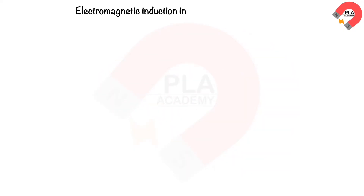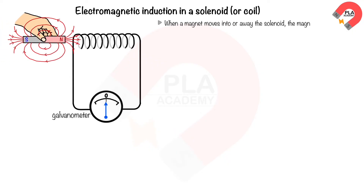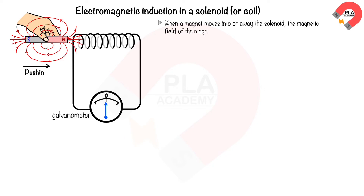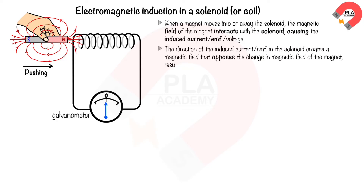We can conclude that for electromagnetic induction in a solenoid or coil: when a magnet moves into or away from the solenoid, the magnetic field of the magnet interacts with the solenoid, causing an induced current, EMF, or voltage to flow in the solenoid. The direction of the induced current creates a magnetic field that opposes the change in the magnetic field of the magnet, resulting in a force exerted on the magnet opposite to the direction of its movement.